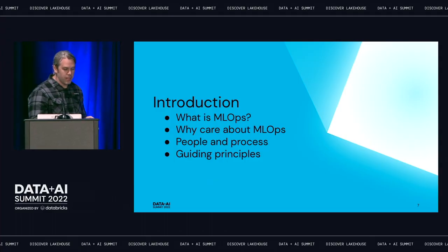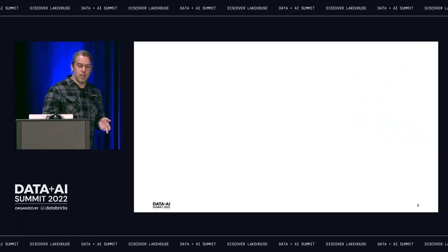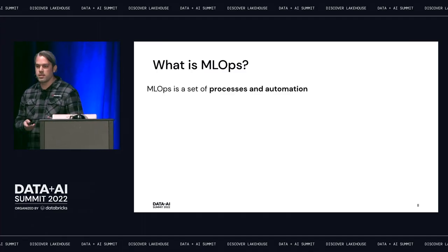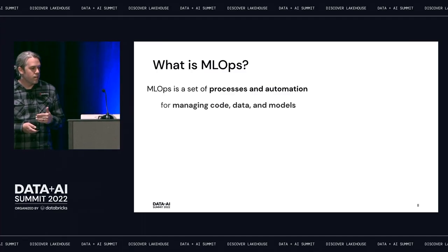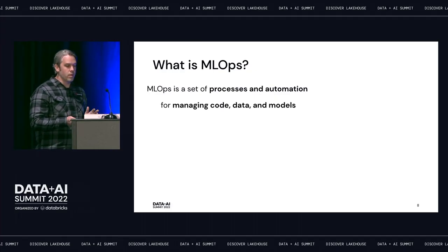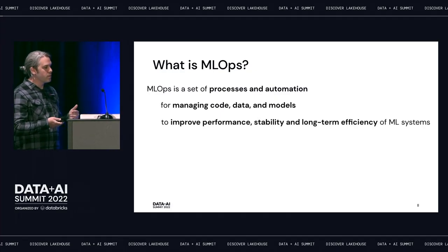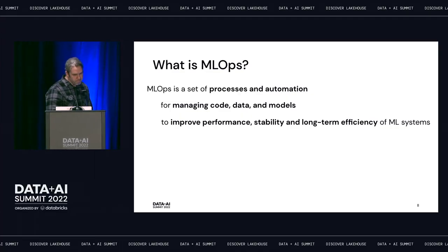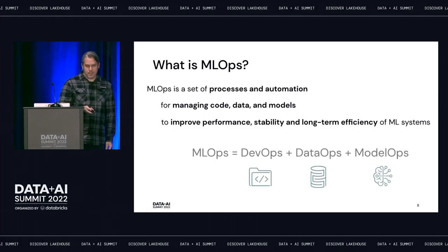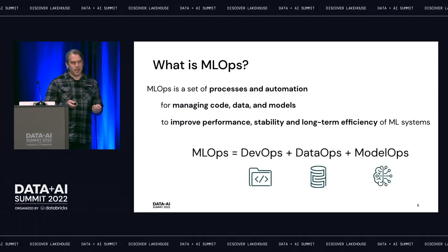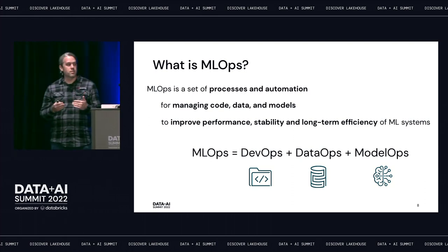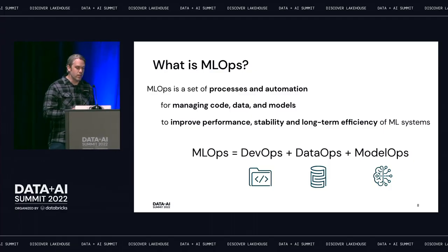Let's begin by defining what MLOps actually is. MLOps is a set of processes and automation managed to jointly manage code, data, and models for the sake of improving the performance, stability, and long-term efficiency of machine learning systems. Put simply, it's DevOps plus DataOps plus ModelOps. The goal of MLOps is really to make your ML systems successful and ensure they're stable for a long time.